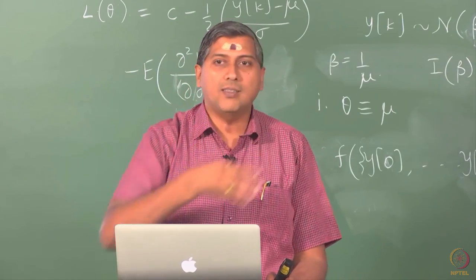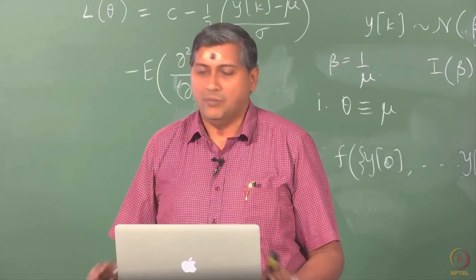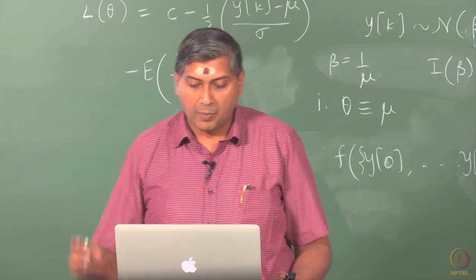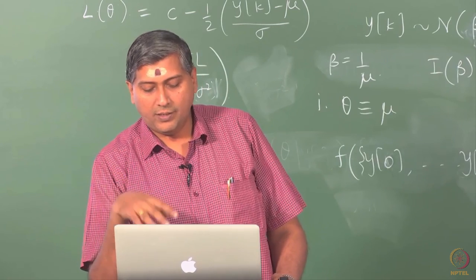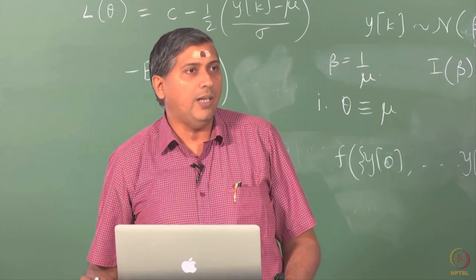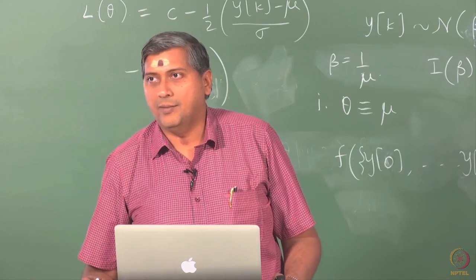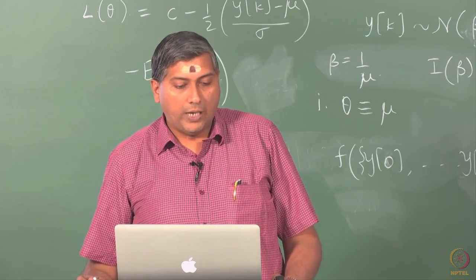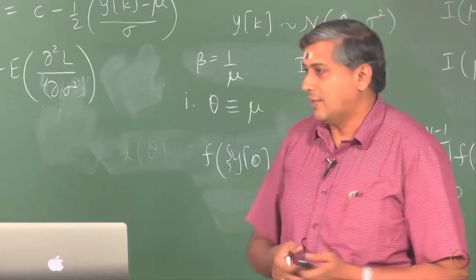Re-parameterization is a small branch of study in estimation theory — you want to re-parameterize a model so that estimation becomes more convenient. Finally, when you have n uncorrelated observations, information increases exactly by a factor of n. But with correlated observations, the scaling of information is less than n. That concludes the Fisher's information discussion.